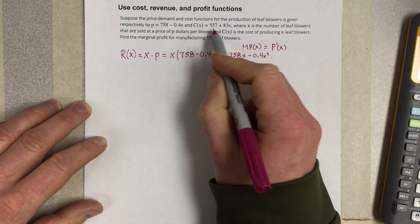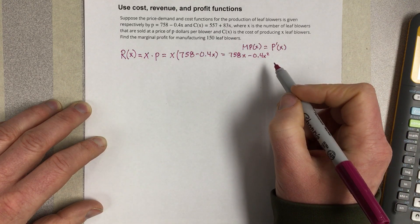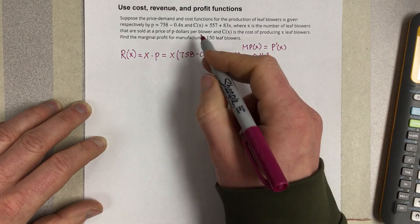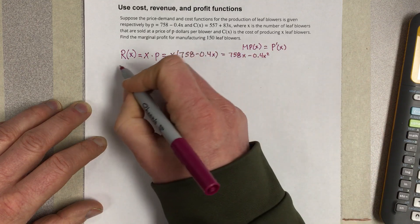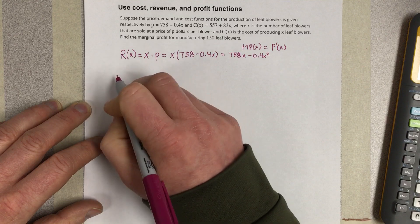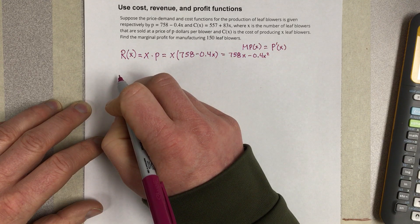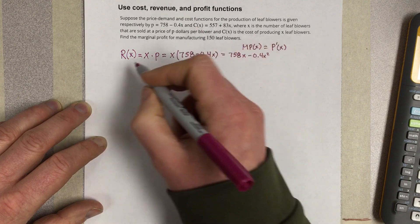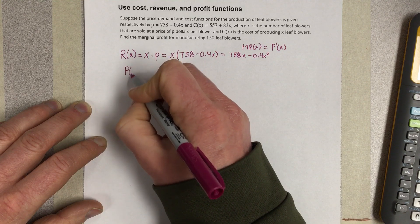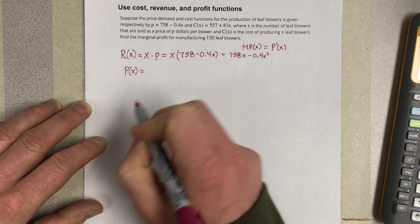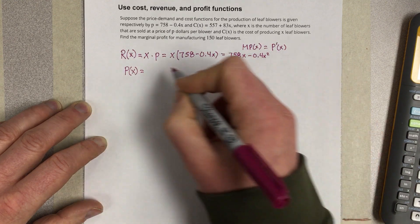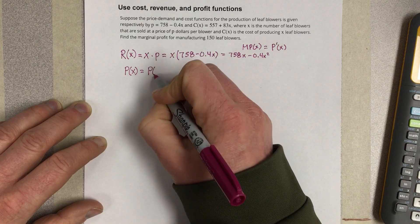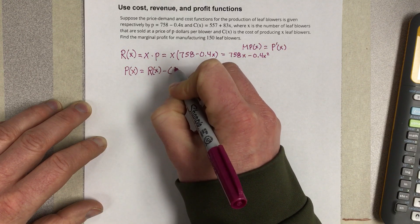And then our cost equation is 557 plus 83x. So we can go ahead and now find our profit by saying our profit equation is equal to our revenue minus our cost.